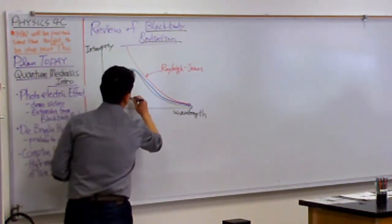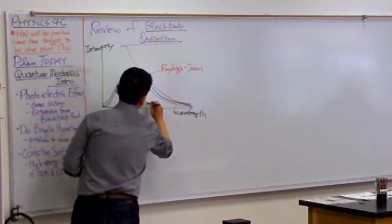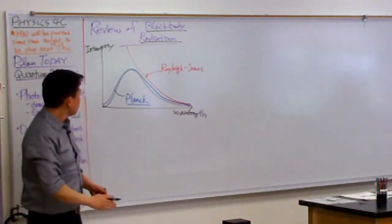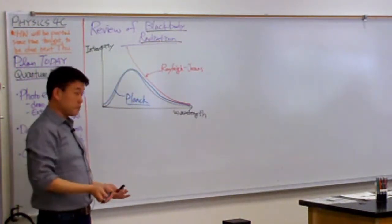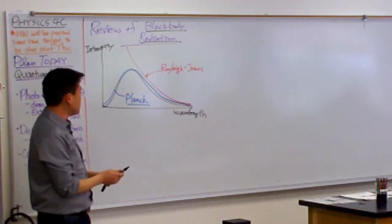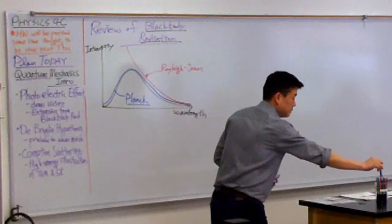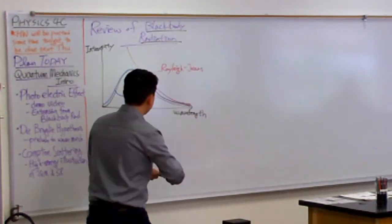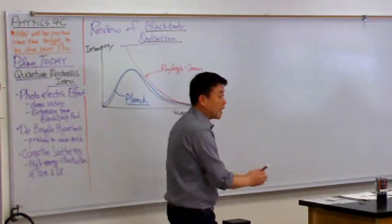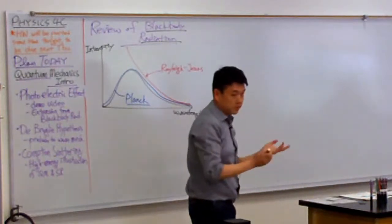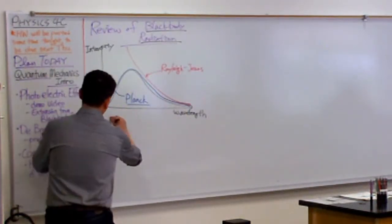And for this Planck law, he had to introduce a poorly justified assumption. The only justification he had for this assumption was that it gave him the correct result. Really, he had no other justification. And this is the thing that I want you to take away from black body radiation. This is the most important thing.